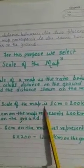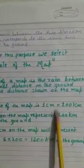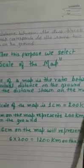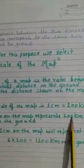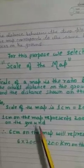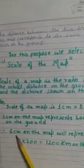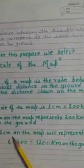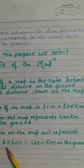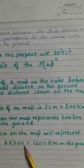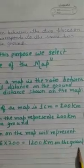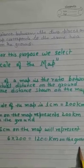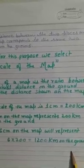Scale of the map is 1 cm equal to 200 km. 1 cm on the map represents how many? 200 km on the ground. So therefore students, the 6 cm on the map will represent 6 into 200 equal to 1,200 km on the ground. I hope it is clear to you.